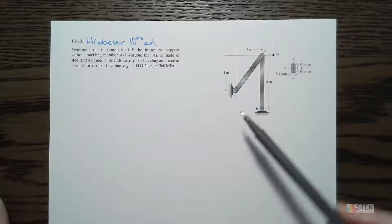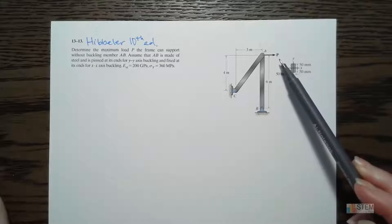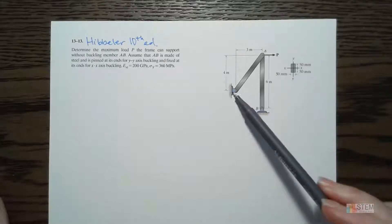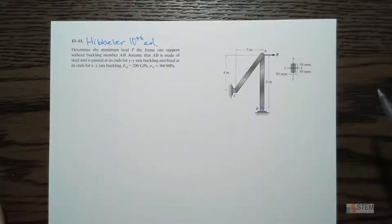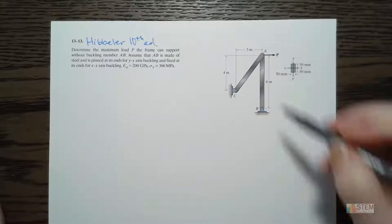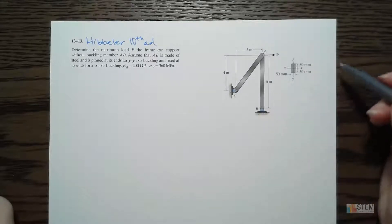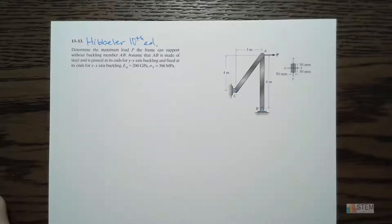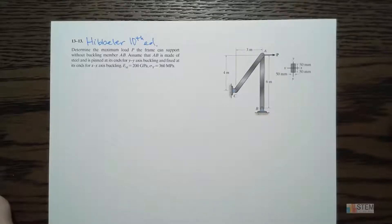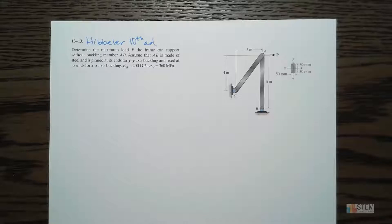What we've got here is a frame with an applied force P going to the right. Notice we've got pins at B and C, and it tells us to determine the max load P the frame can support without buckling member AB - the vertical one. We are to assume that AB is pinned at its ends for y-axis buckling, and fixed at its ends for x-axis buckling.